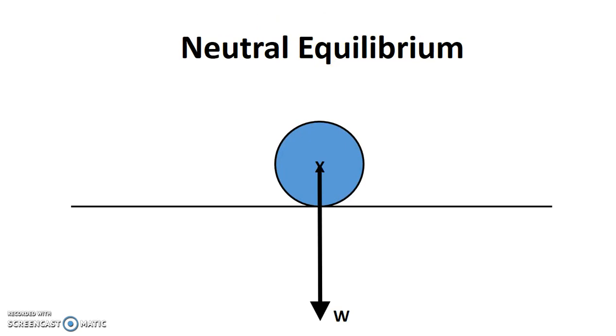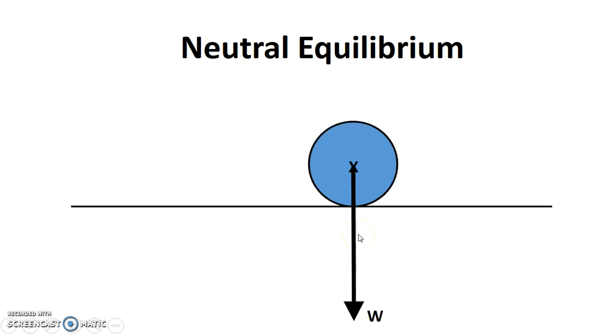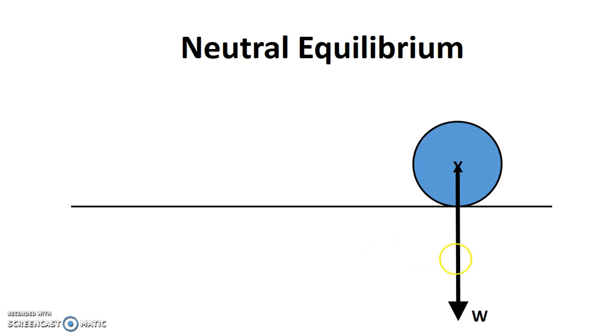Third one will be, third type of equilibrium will be neutral, neutral equilibrium. For example, if you have a ball here, center of gravity and the weight running through it vertically. If you have to move a ball, just as you know, you move a ball anywhere, it will basically just stay there.